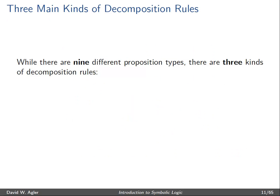So while there are nine different proposition types and a corresponding decomposition rule for each one, essentially there are three main kinds of decomposition rules — three main ways to display the conditions under which a decomposable proposition is true. There are stacking decomposition rules, branching decomposition rules, and branching and stacking decomposition rules.